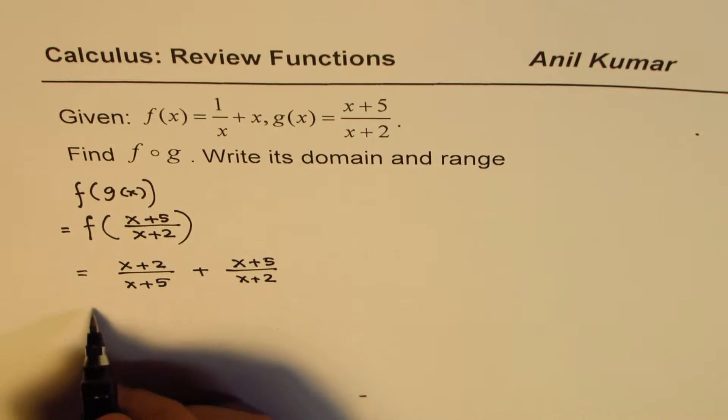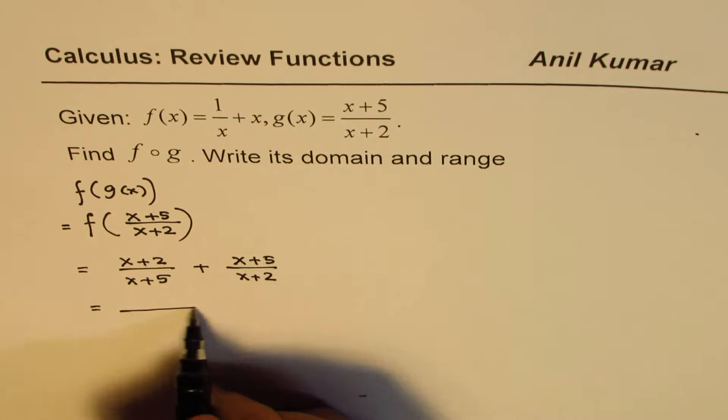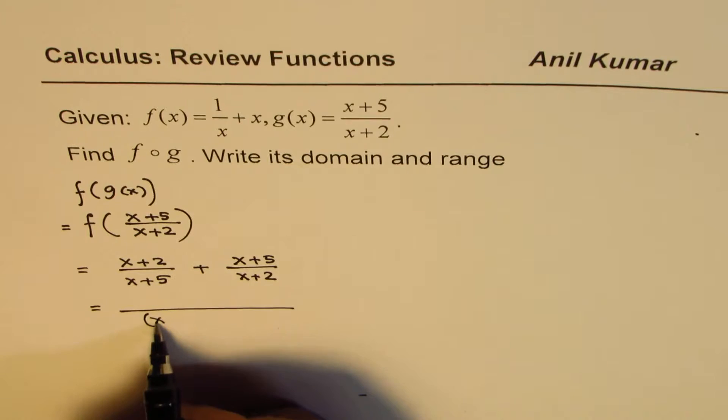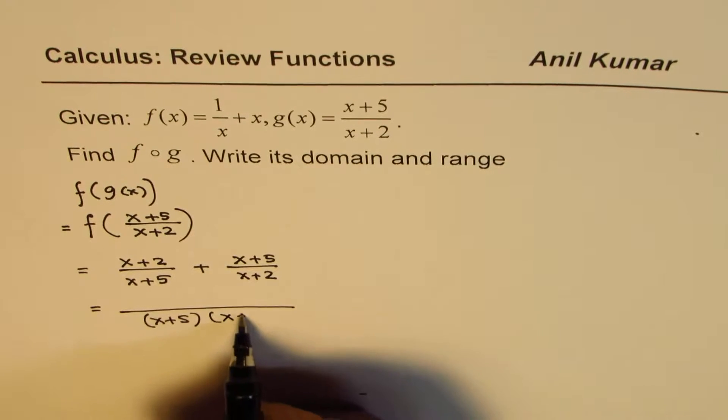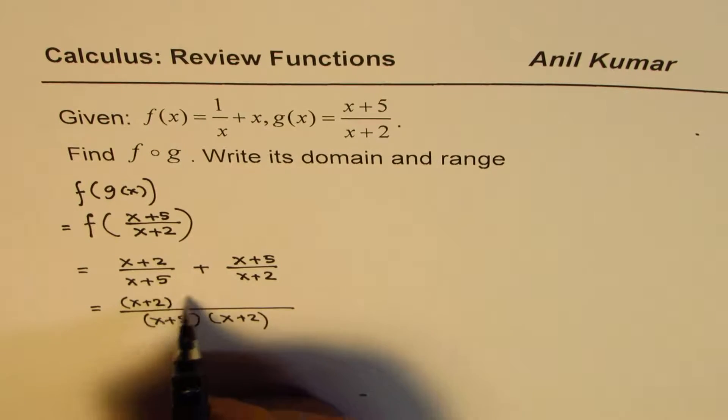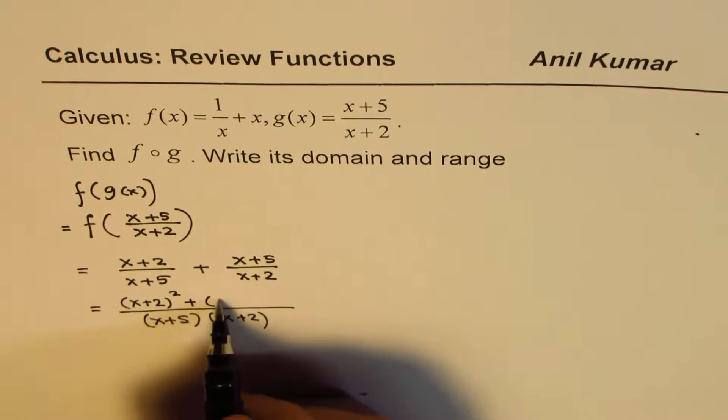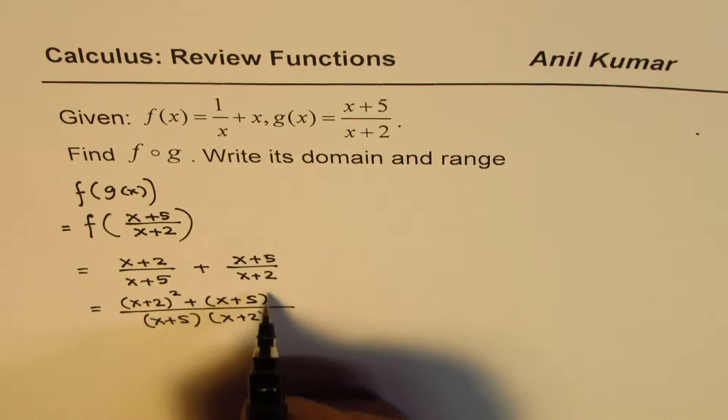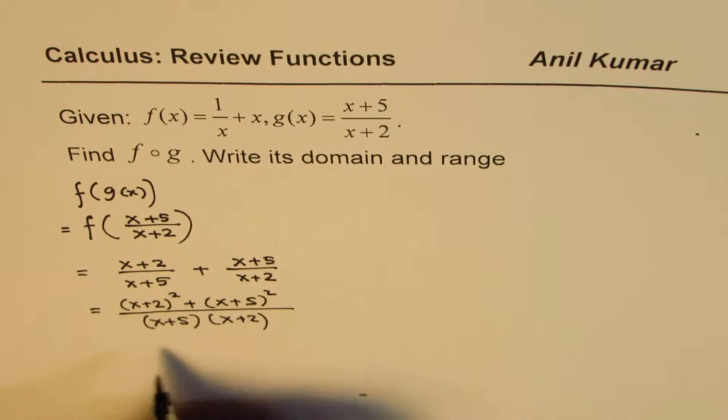Now you can always simplify this, taking common denominator, which will be x plus 5 times x plus 2. So this gets multiplied. You get x plus 2 whole square plus x plus 5 whole square.